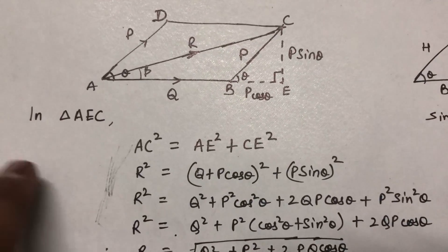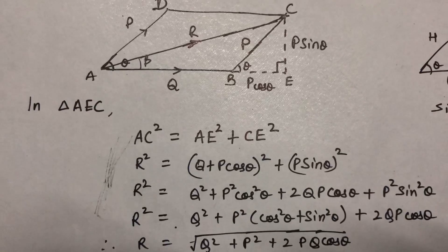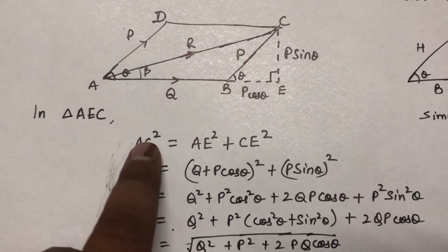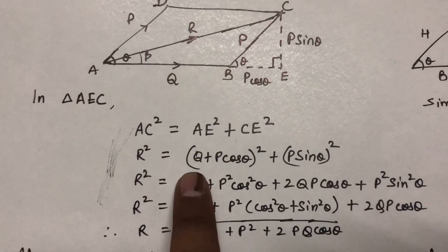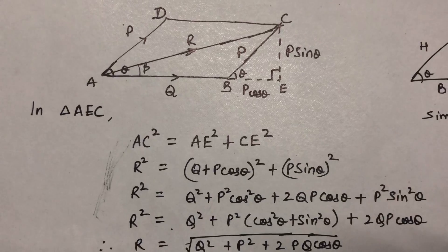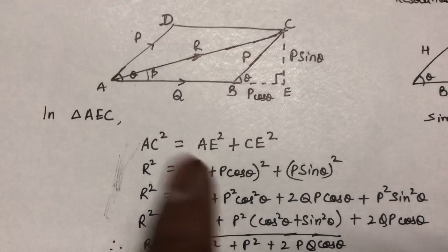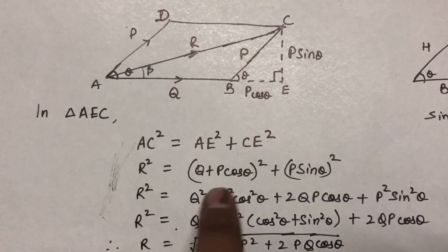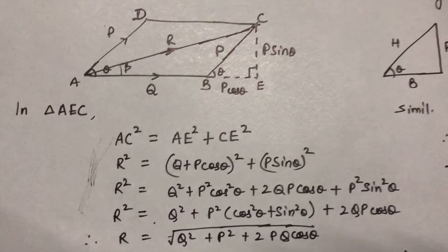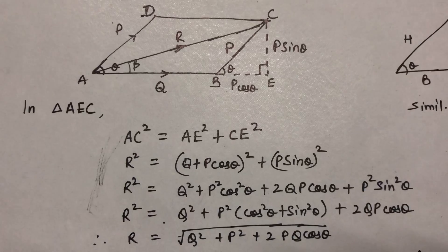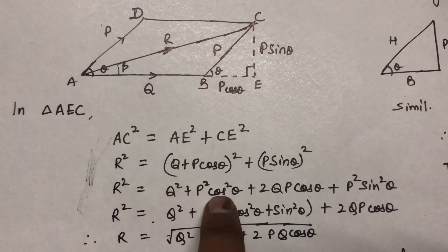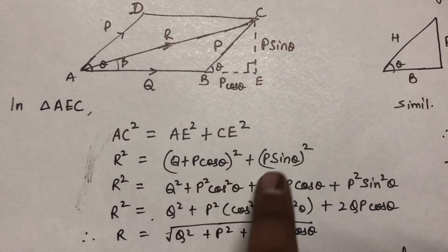Now we apply the Pythagorean theorem in triangle ACE: AC² equals AE² plus CE². The value of AC is R. The value of AE is the sum AB plus BE, where AB equals Q and BE equals P cos θ, so AE equals Q plus P cos θ. CE is P sin θ. Applying the formula (A + B)² gives R² equal to Q² plus P² cos² θ plus 2QP cos θ, plus P² sin² θ.